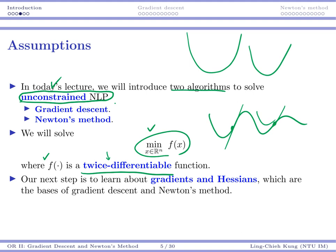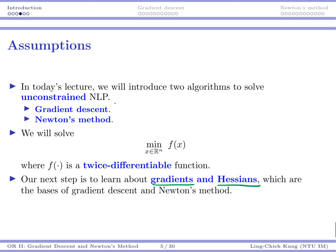Our next step would be to learn about gradients and the Hessians. So that's two things that are somehow you should have learned in your calculus course. But if you have not learned that, or you have forgotten it, then let's take a look at what they are.